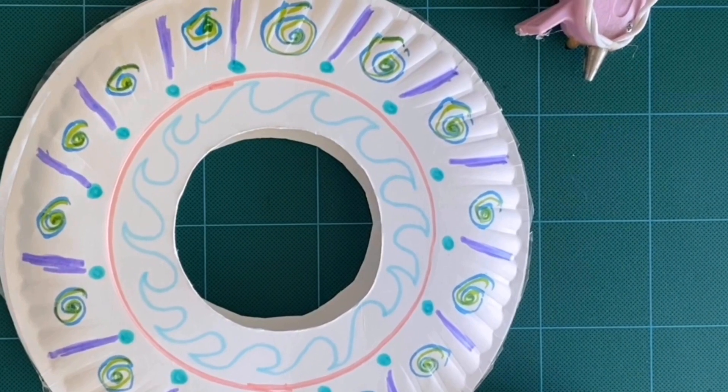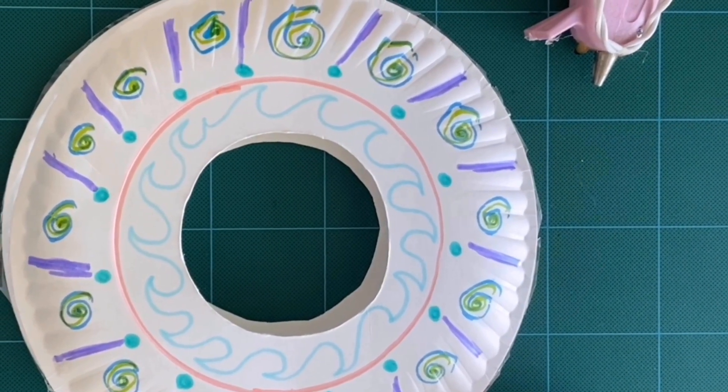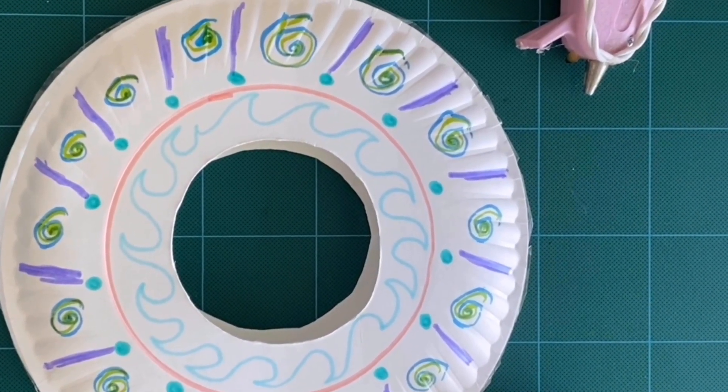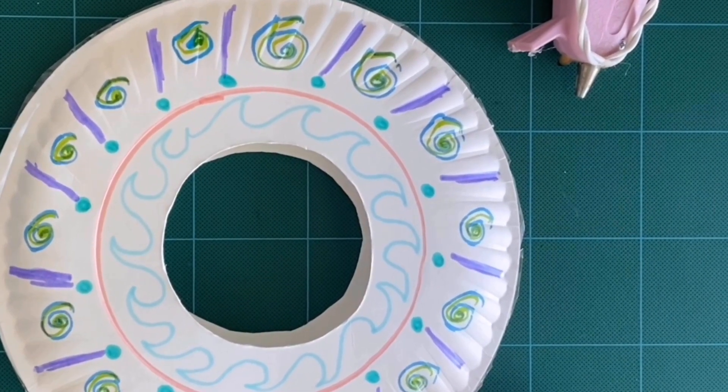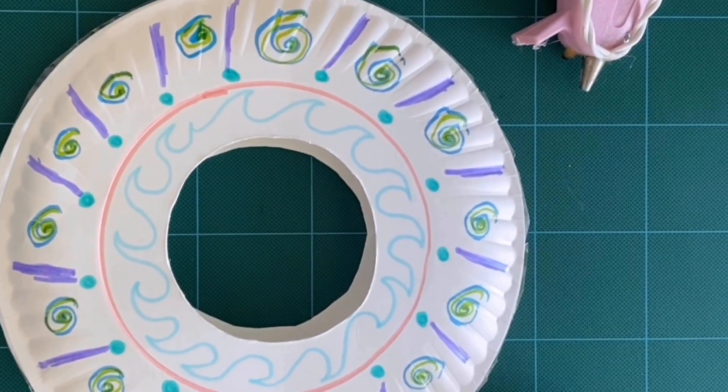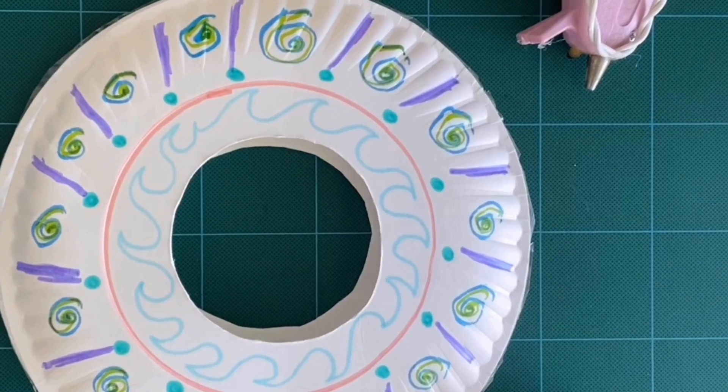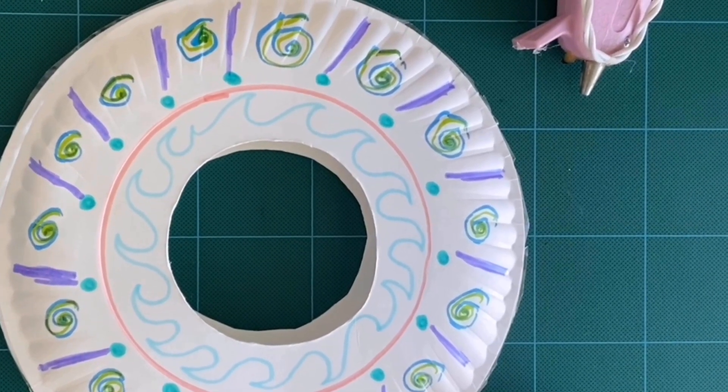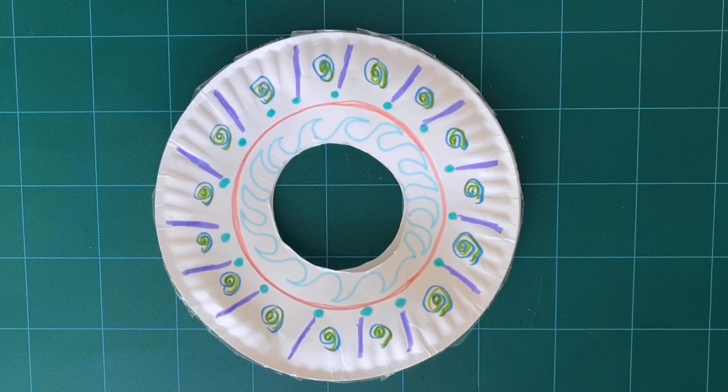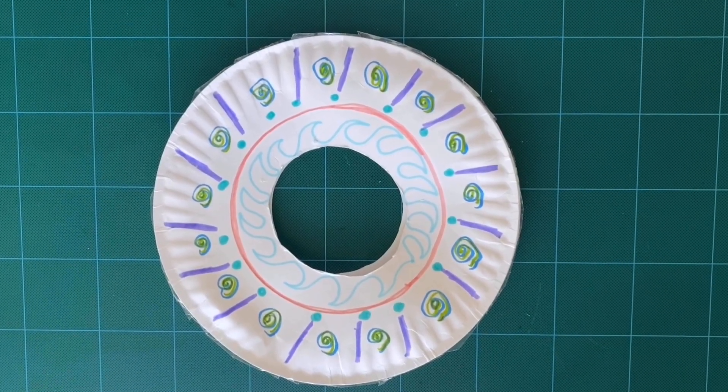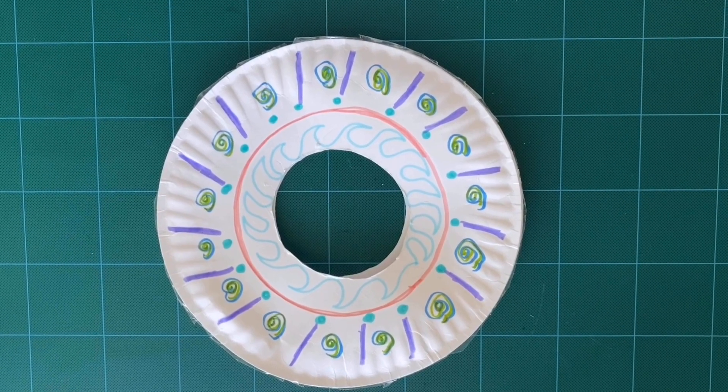Now that you've decorated it and cut out your circles in the middle, you can either have a parent hot glue the edges together or you can use the tape to tape your edges together. And there you have your frisbee. Now that you have your frisbee made, I'm going to show you a few fun activities that you can do with your homemade frisbee.